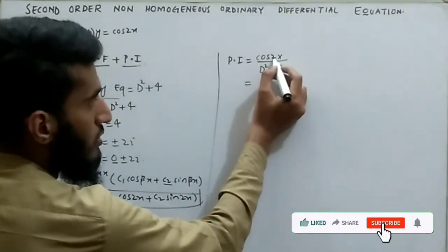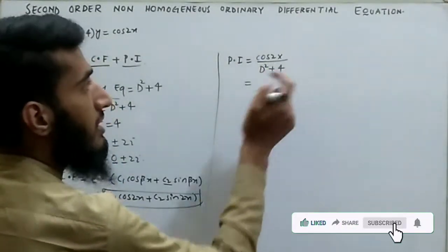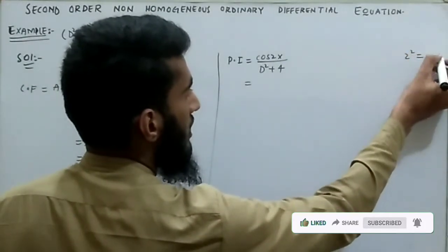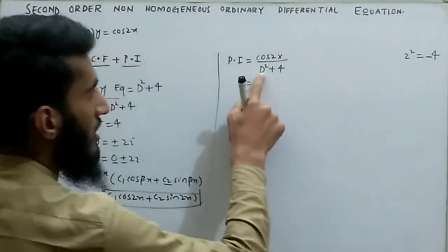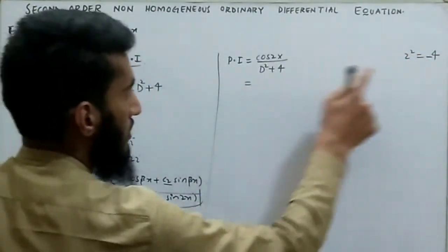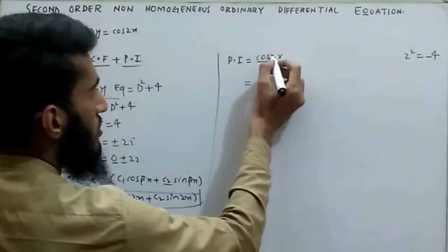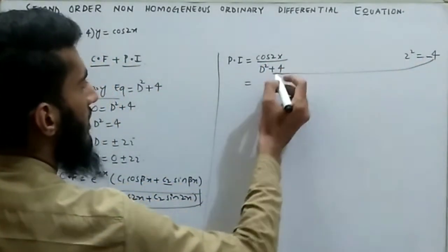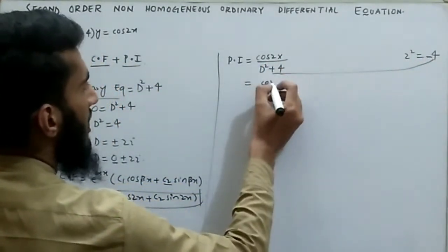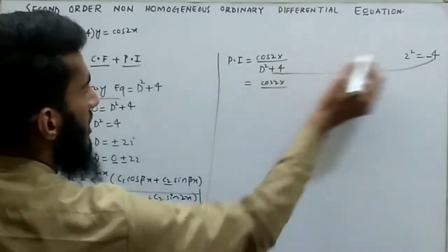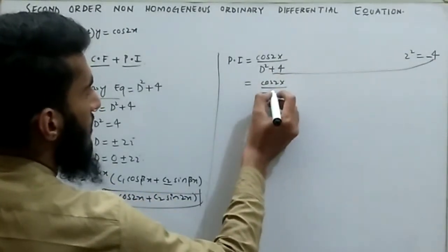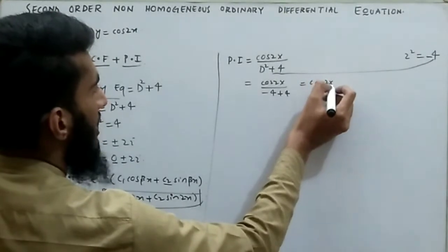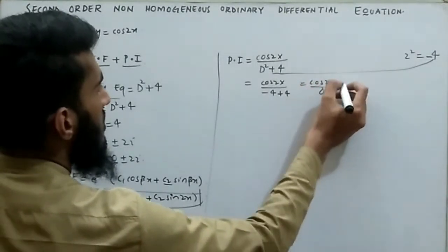To find the particular integral, the coefficient of x is 2, so we substitute D² with −(2²) = −4. Putting −4 in place of D² gives: cos(2x) divided by (−4 + 4), which equals cos(2x) divided by 0. This is undefined.